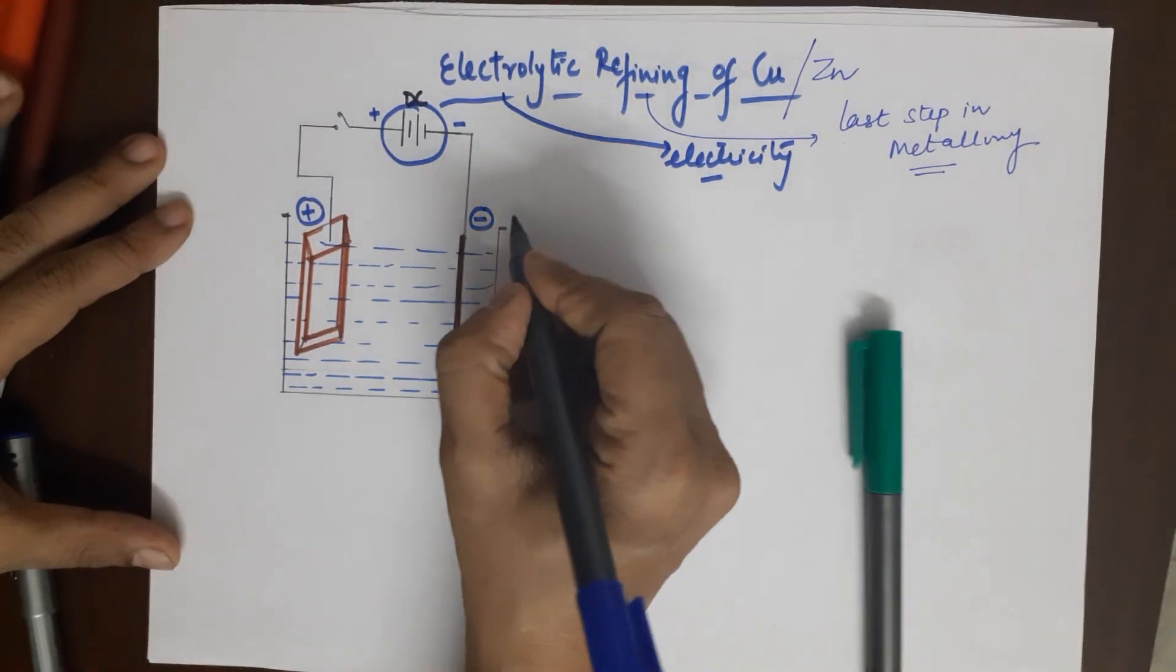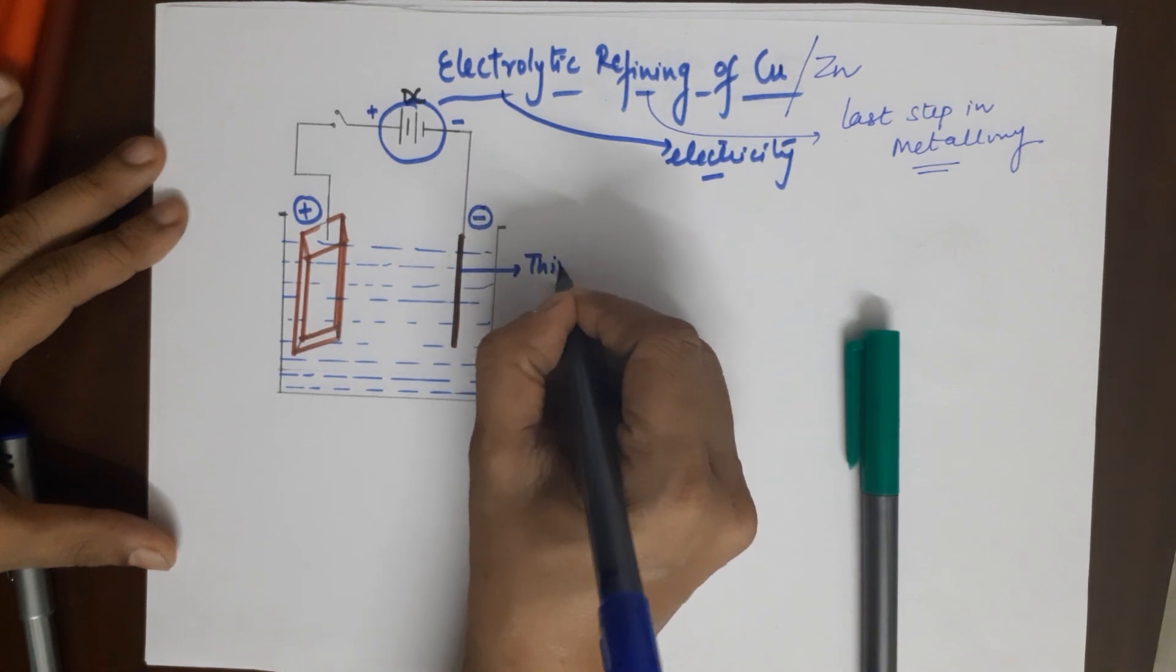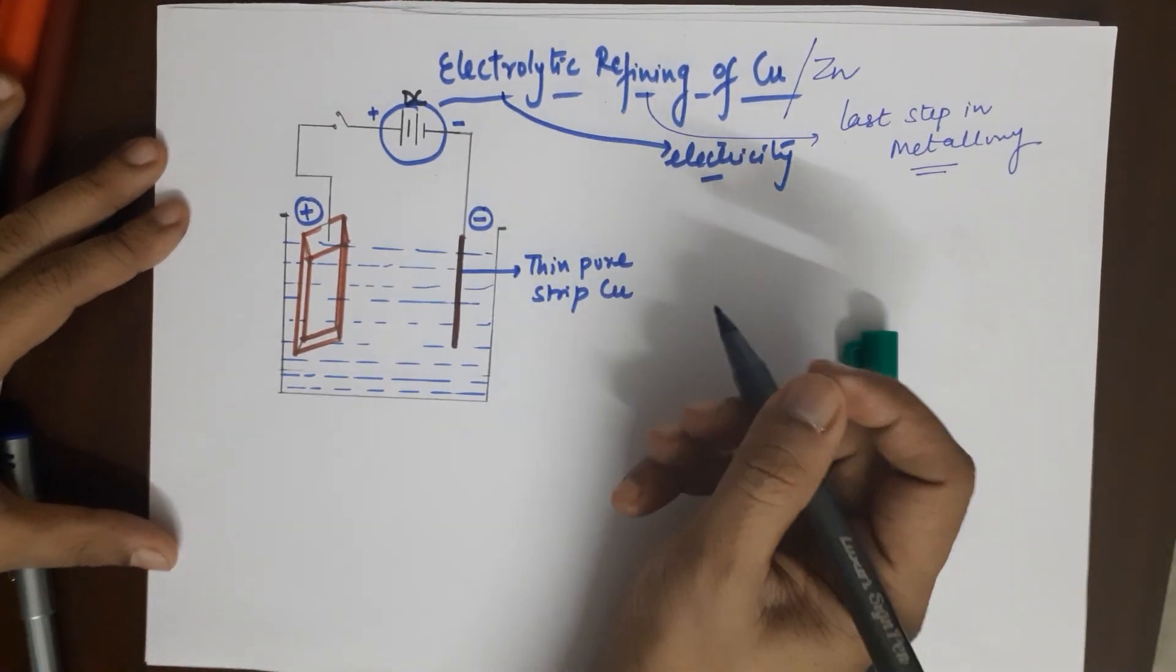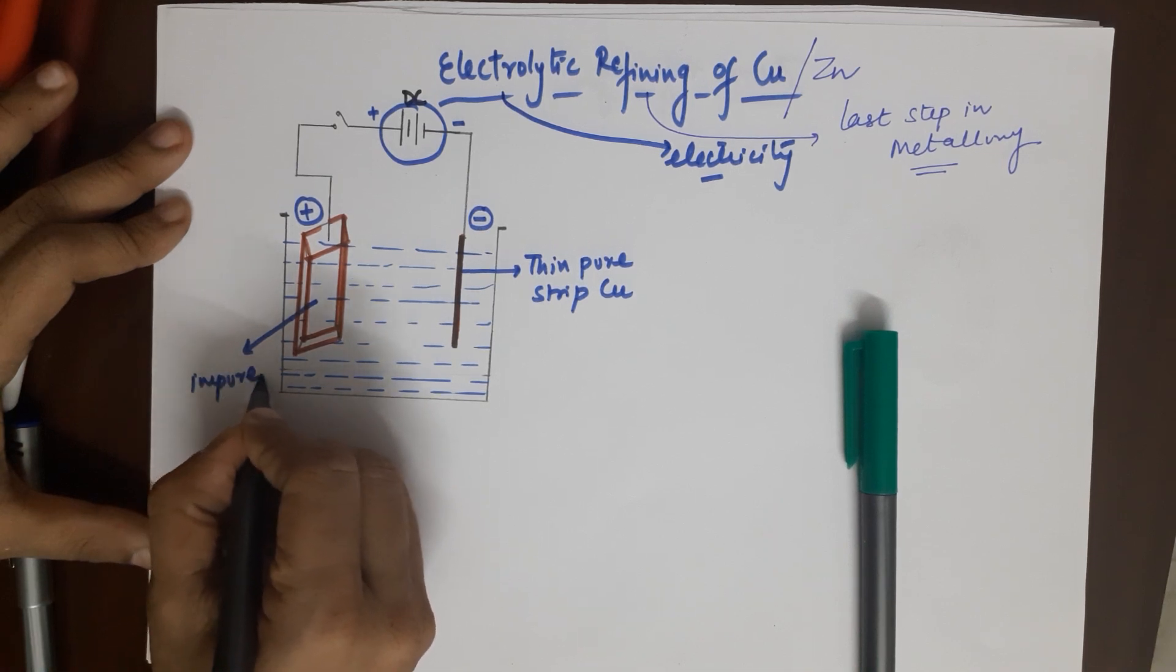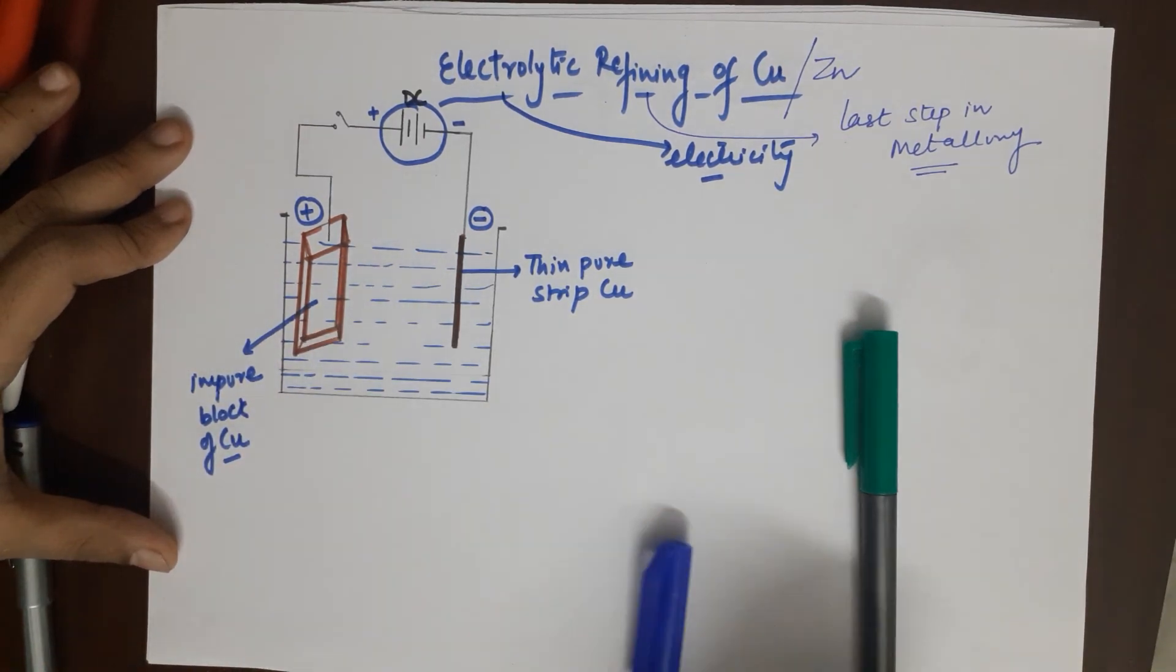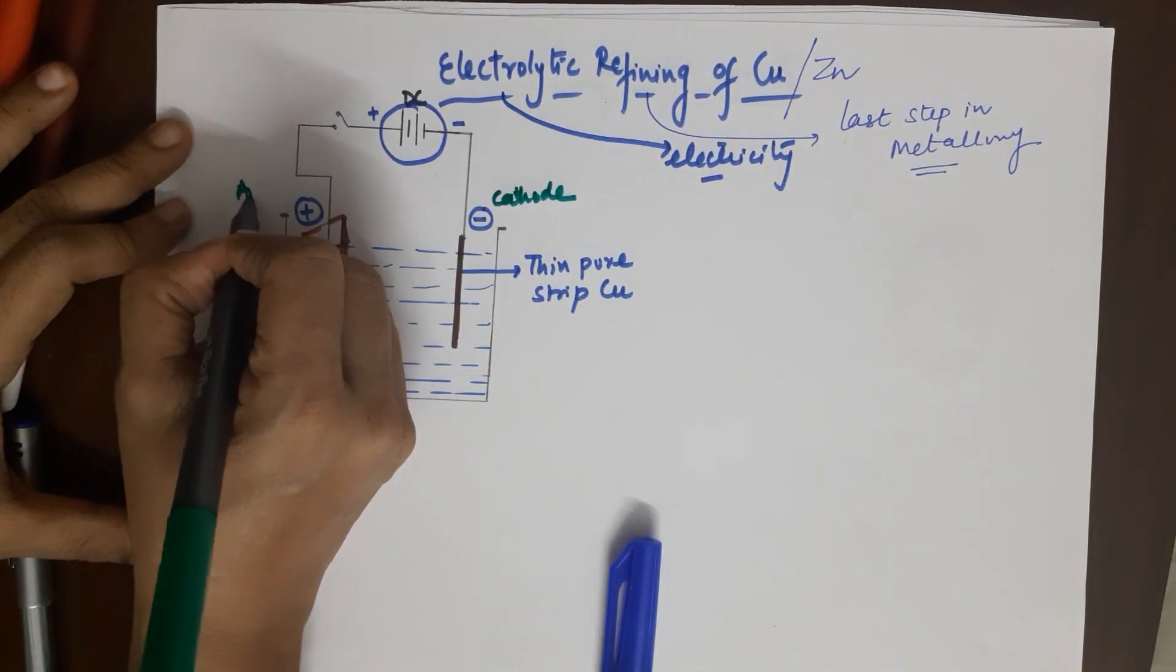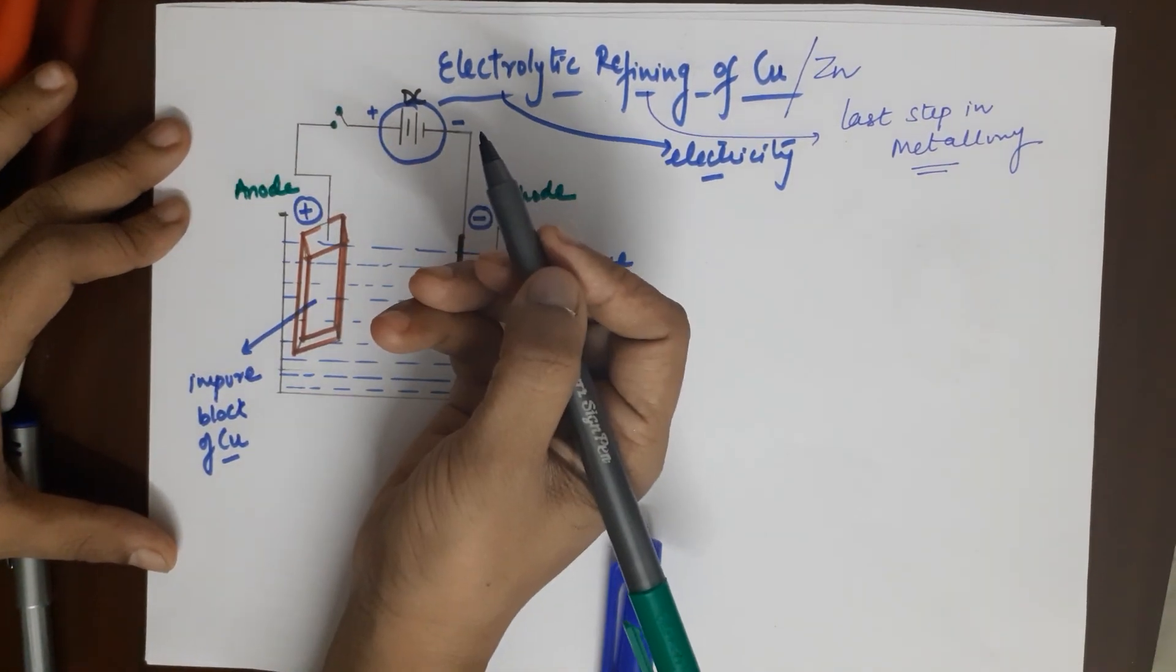The negative terminal is a thin pure strip of copper or zinc, whatever you are trying to extract, whereas this is your impure block of copper that you have to purify. Since this is connected to the negative terminal, this becomes the cathode while this is your anode. This is the key just to connect and start the process.